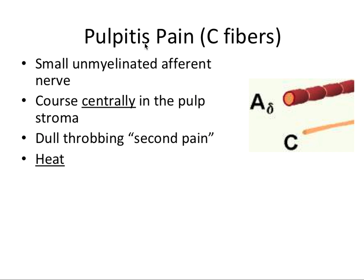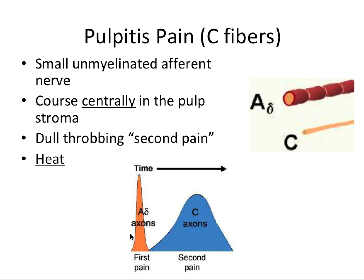Pulpitis pain is conducted by C fibers. Compared to A-delta fibers, C fibers are small, unmyelinated, and also afferent. They course centrally in the pulp stroma. C fibers are involved with dull, throbbing second pain — like the sore, achy feeling after you stub your toe. This is more often associated with heat. On a graph showing time on the x-axis, A-delta axons transmit the sharp first pain, while the C fiber second pain creeps up later and lasts longer, though it may not be quite as intense.